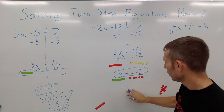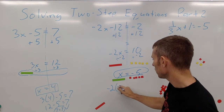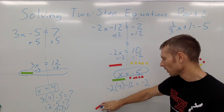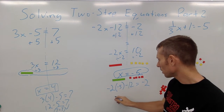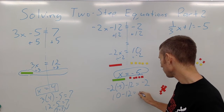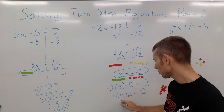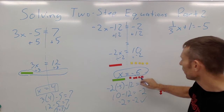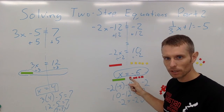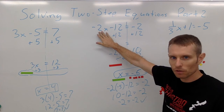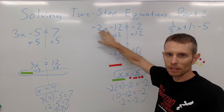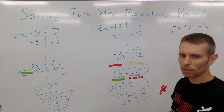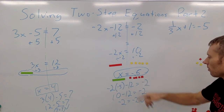Now we check our answer by plugging in: negative 2 times negative 5 minus 12 should equal negative 2. Following order of operations, negative 2 times negative 5 is 10, and 10 minus 12 is negative 2. That checks out. If we had mistakenly gotten positive 5, then negative 2 times 5 minus 12 would give negative 22, which does not equal negative 2 — so negative 5 is confirmed correct.